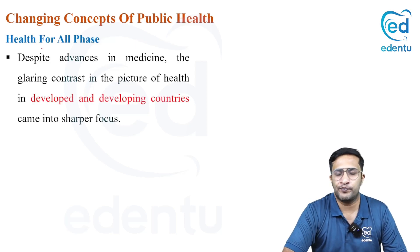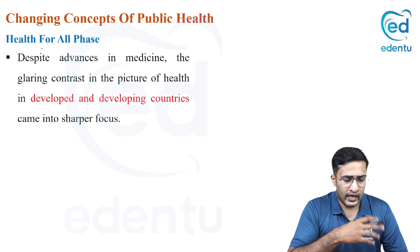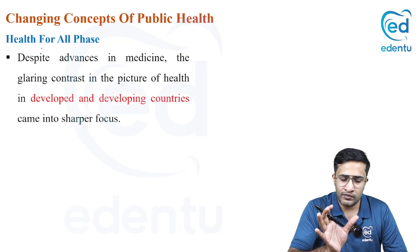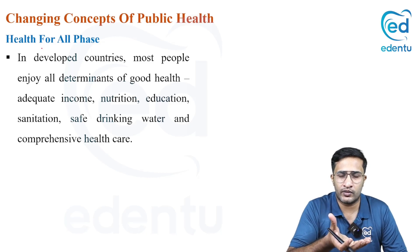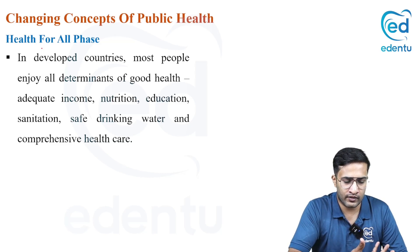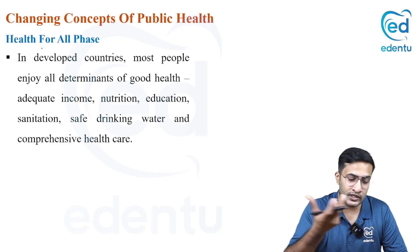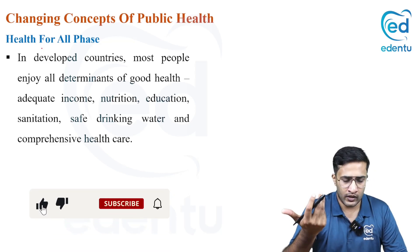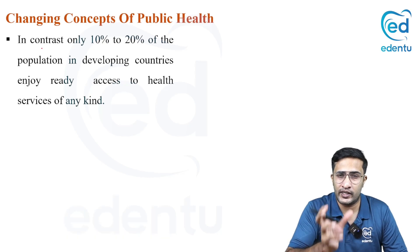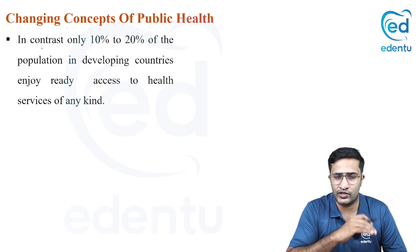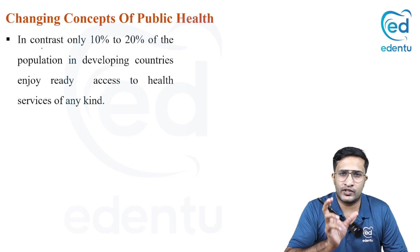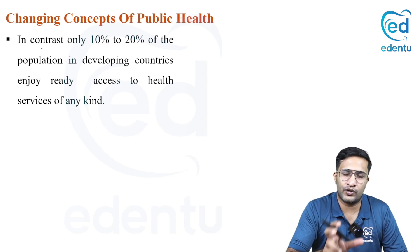Lastly, the health for all phase. There is a big disparity between developed and developing countries. In developed countries, the majority of people have access to good, affordable, quality healthcare, good income, good nutrition, education, safe drinking water, and sanitation. But in developing countries, only 10 to 20 percent of the people have these privileges. The remaining 80 percent of the developing nations' population is devoid of all these privileges.